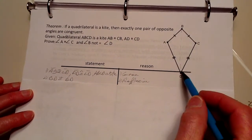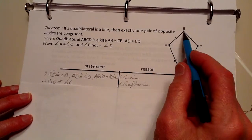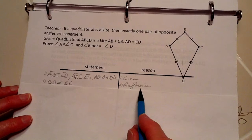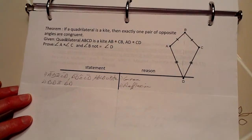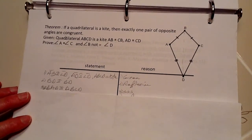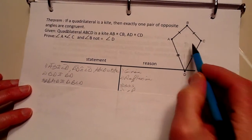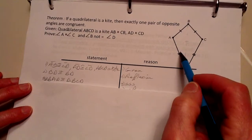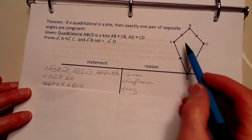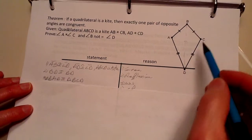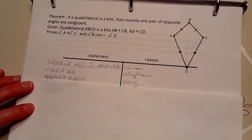by construction, put a line in here, BD, which is congruent to itself because of the reflexive property. From that, we know that we've already identified three sides - side, side, side - so triangle BAD and BCD are congruent because of side, side, side.